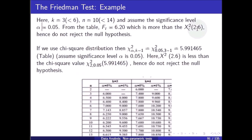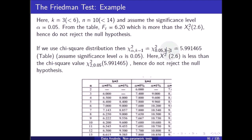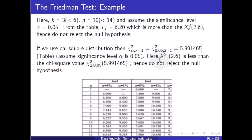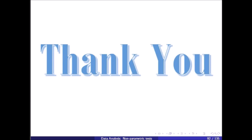If we use the chi-square distribution table, the degrees of freedom are k − 1 = 2, and at a 5% significance level the chi-square table value is 5.9914. The calculated value 2.6 is less than 5.9914, hence we do not reject the null hypothesis. That is the end of this video.